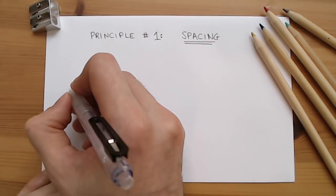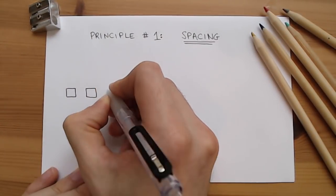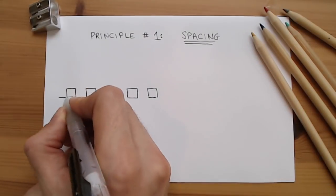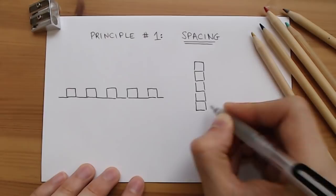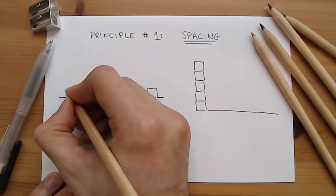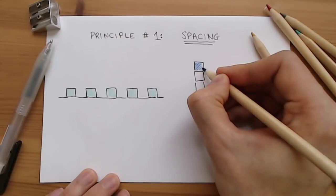The robust literature on the spacing effect clearly shows that studying time is more efficient if it is spread out over multiple sessions than if it is compressed into one session. More exposures to the information separated out in time will result in better retention than if you cram them together in one burst.